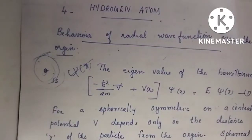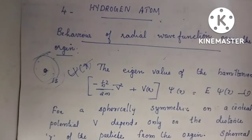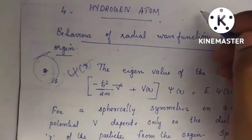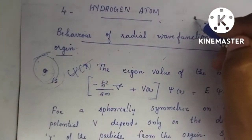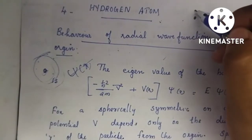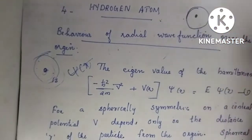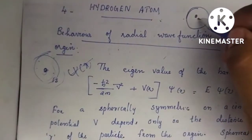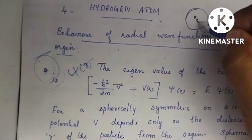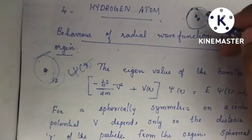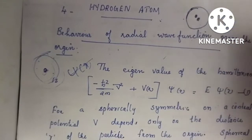Next is quantum mechanics. As we know, hydrogen consists of a nucleus that is a proton, and then an electron revolving around the nucleus. That means it has a proton and an electron, and that electron is revolving around that nucleus.